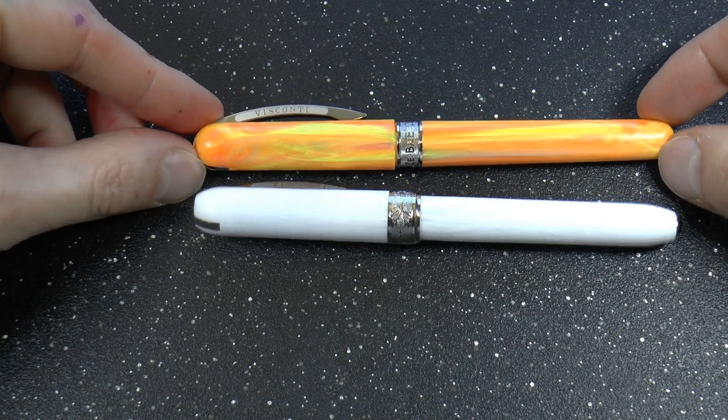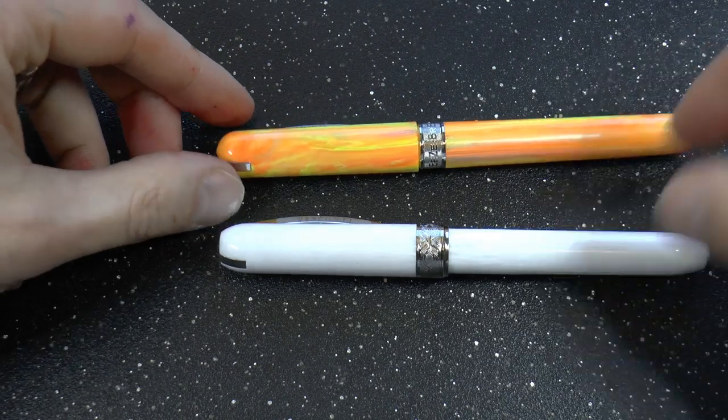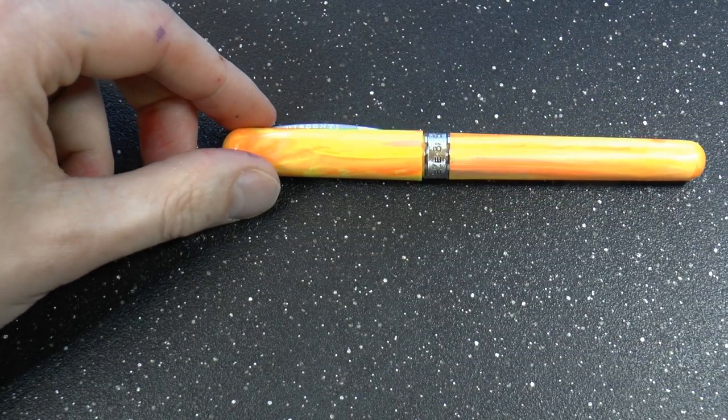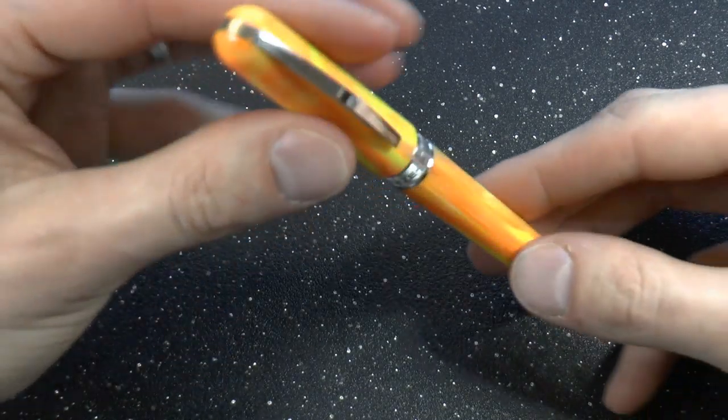These pens also have a magnetic closure in the cap, that is why they are so attracted to each other, because they clearly cannot keep their caps off each other. So let's put this Rembrandt away and let's continue with the Breeze. Let me cover the parts for you.